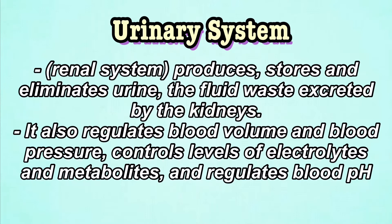The urinary system, also known as the renal system, produces, stores, and eliminates urine, the fluid waste excreted by the kidneys. It also regulates blood volume and blood pressure, controls level of electrolytes and metabolites, and regulates blood pH.